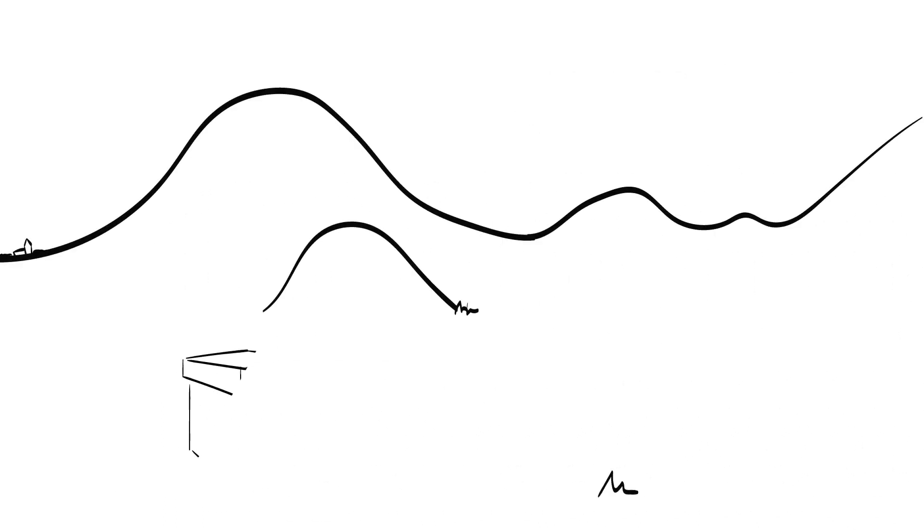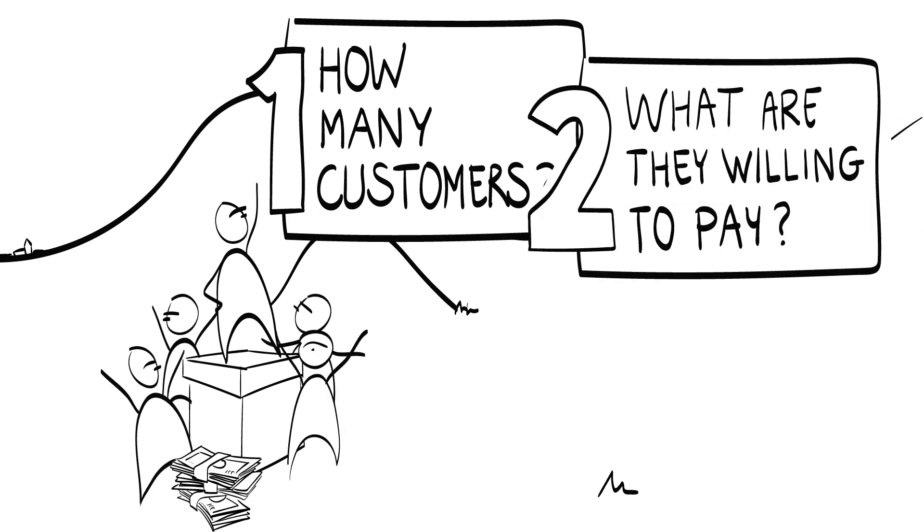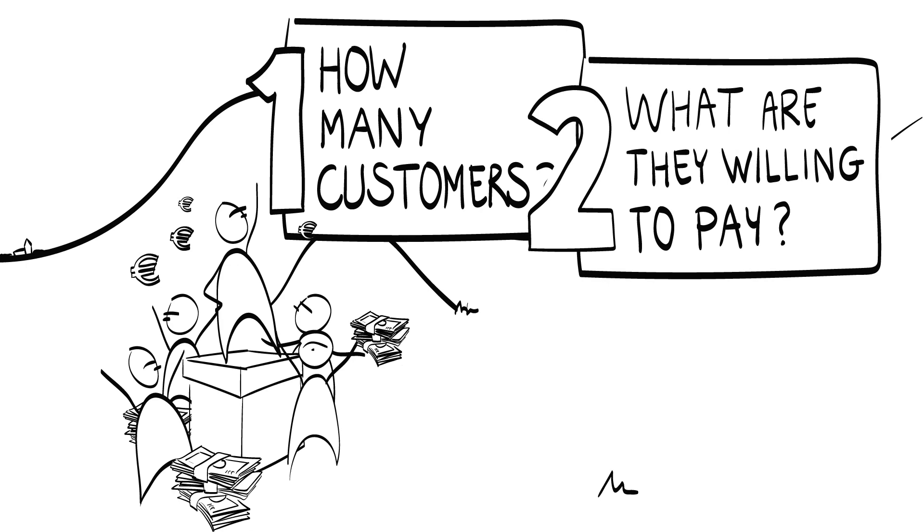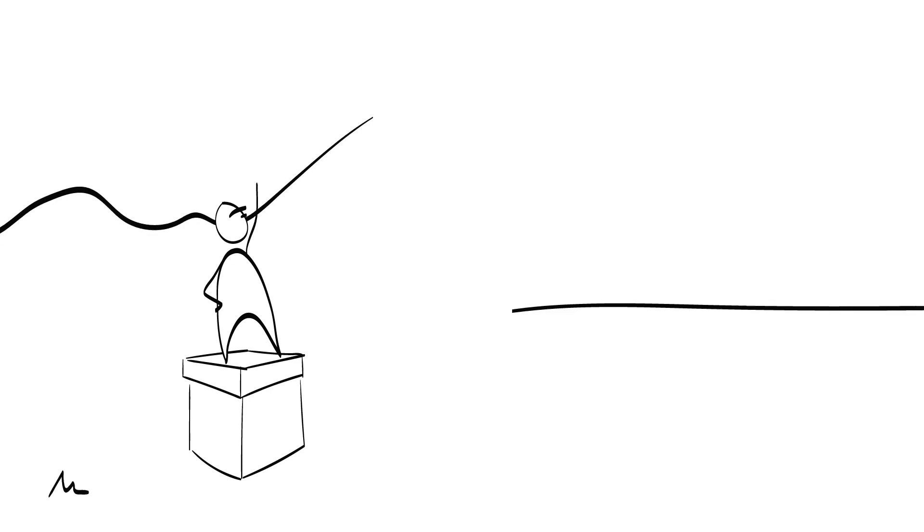When you have found a good match between your product idea and the expectations of your persona, you must address two important issues. How many customers does your persona represent, that is, how big is your beachhead market, and what are they willing to pay for your product? Make sure that the needs of your persona are still representative of your beachhead market. If not, you may have gradually drifted away from a mainstream market towards a niche market.